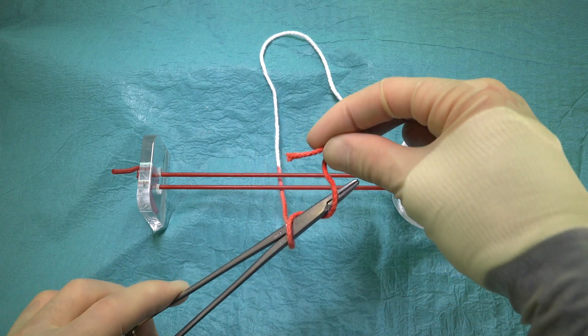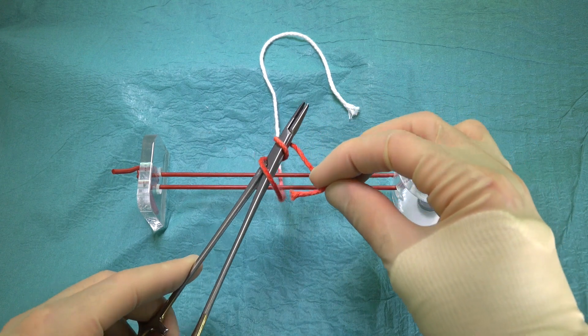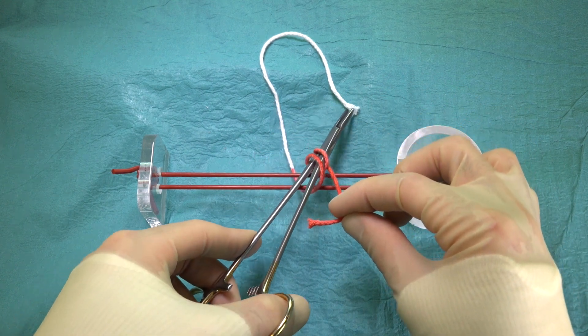The needle holder is then used to pick up the end of the suture that lies away from us, and pulls it towards us, passing it through the loop as it does so.